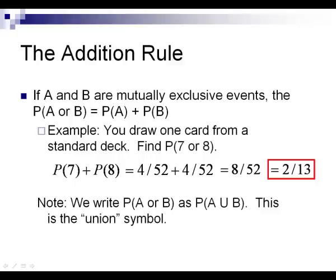The union symbol is the U. P(A ∪ B) — where U is the union symbol — means the probability of A or B occurring.